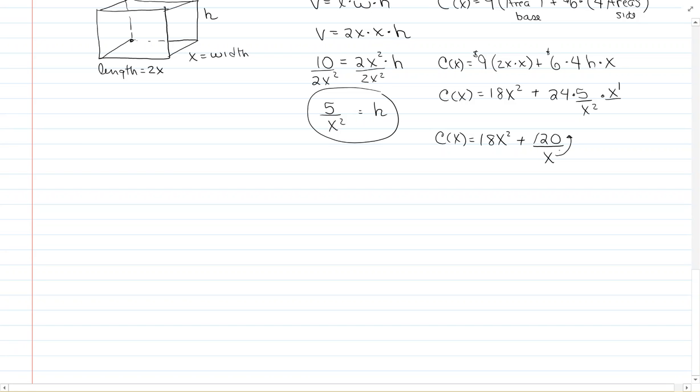I'll rewrite the cost function: C(x) equals 18x squared plus 120x to the minus 1 power. Now take the derivative: pull the power down in front and decrease the exponent by 1 for each term. So C'(x) equals 36x minus 120x to the minus 2.